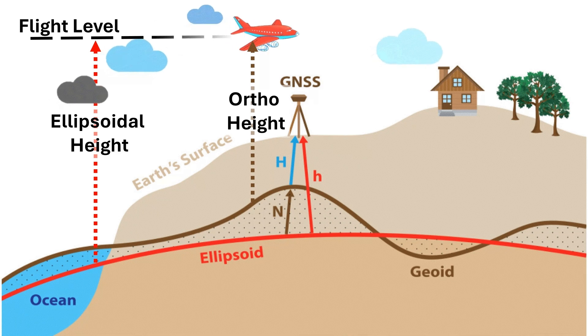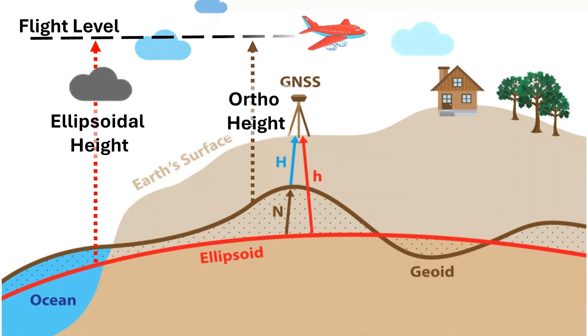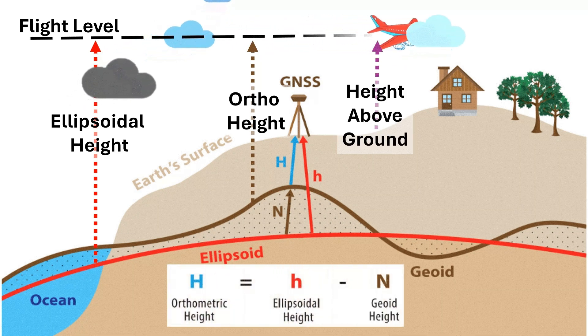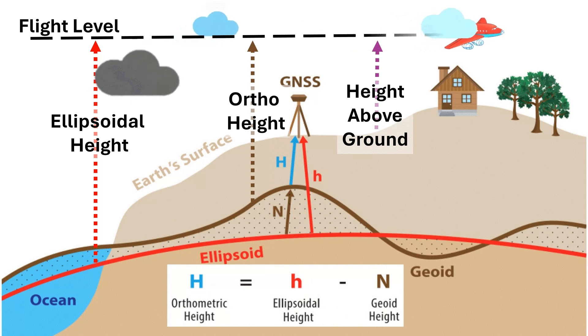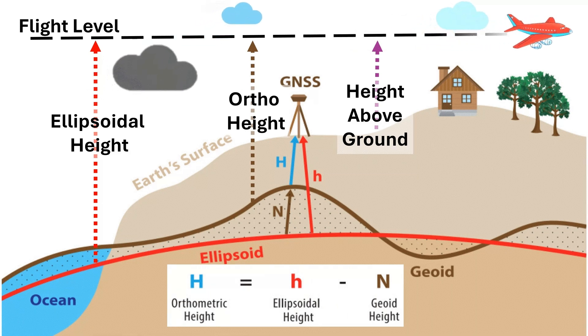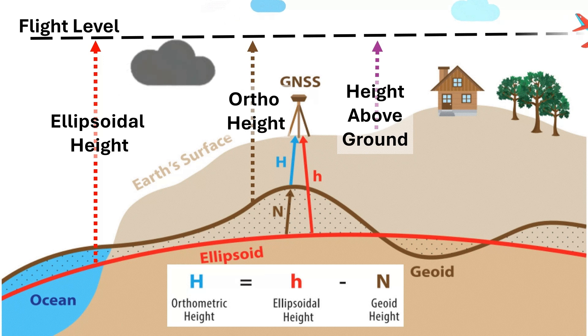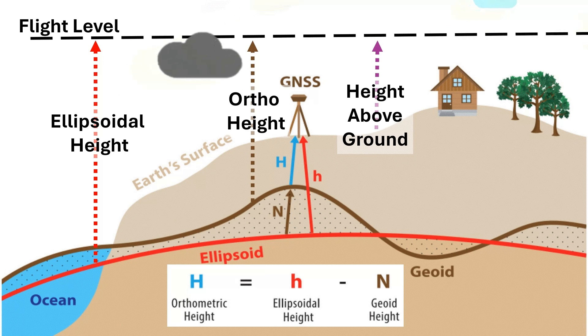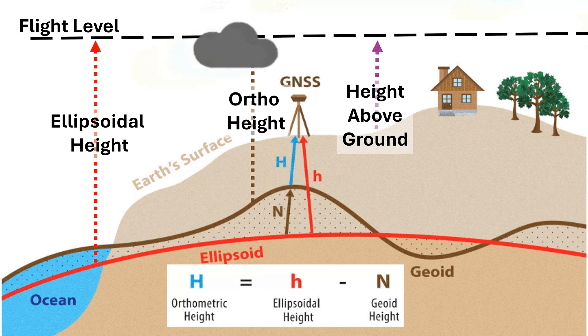The ellipsoid and geoid are fixed and not dependent on anything — except time. Orthometric heights and ellipsoidal heights are the best references for height measurement and are called vertical datums. Your GNSS system will always show you both the orthometric height and the ellipsoidal height.